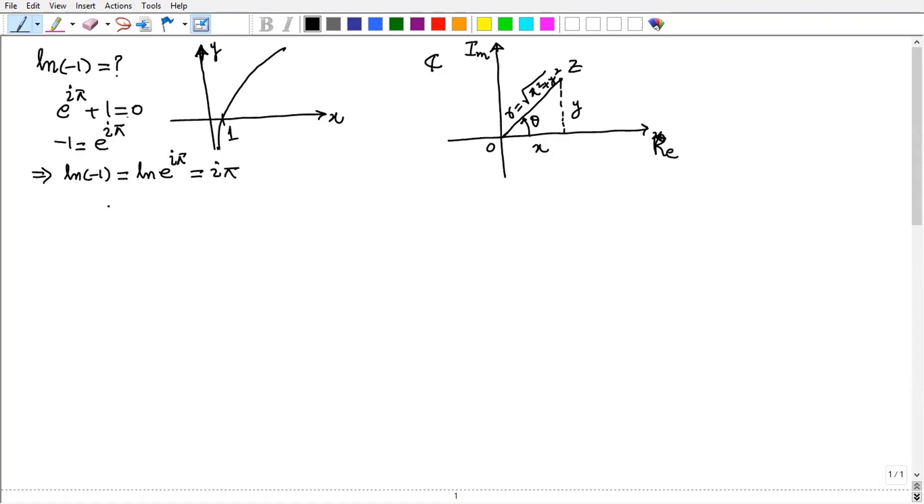Now this z can be written as r e to the power i theta by Euler form. Take log both the sides. So log z equals log r e to the i theta.